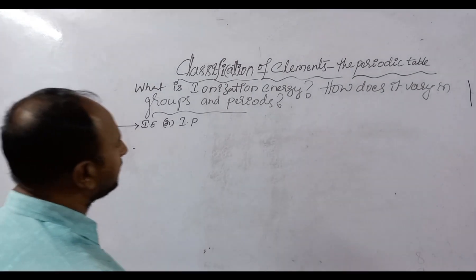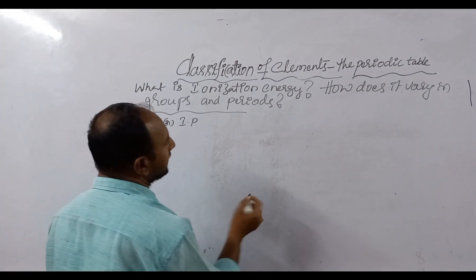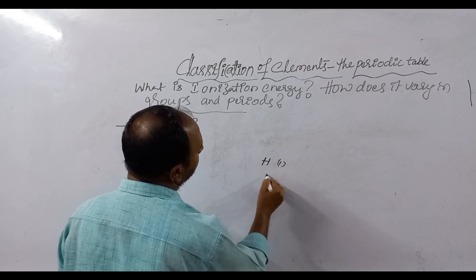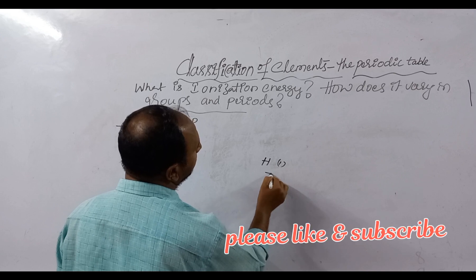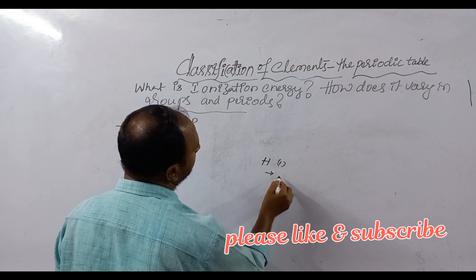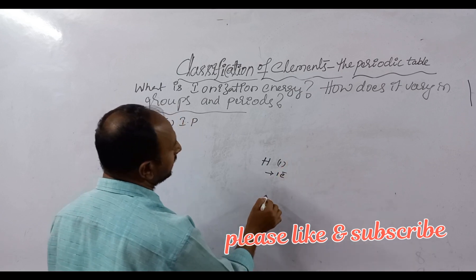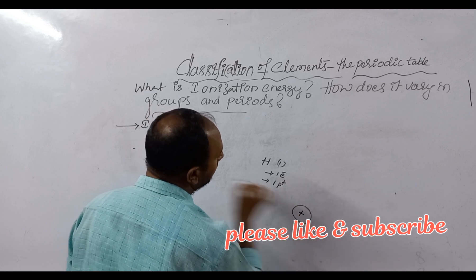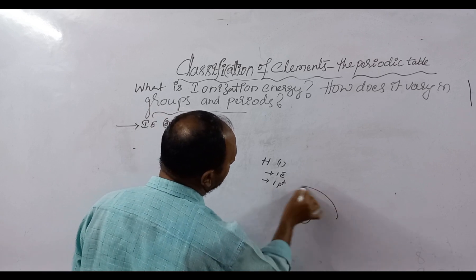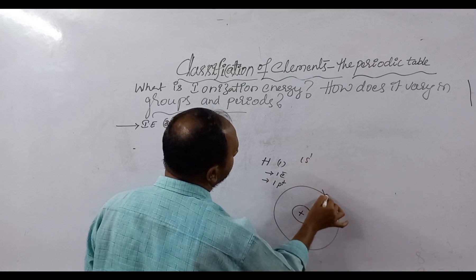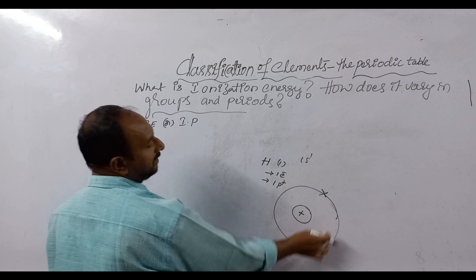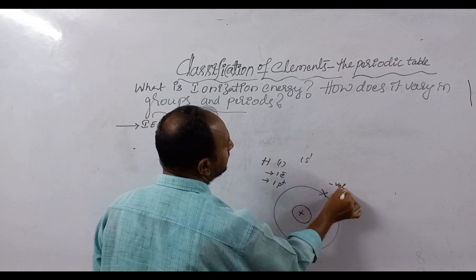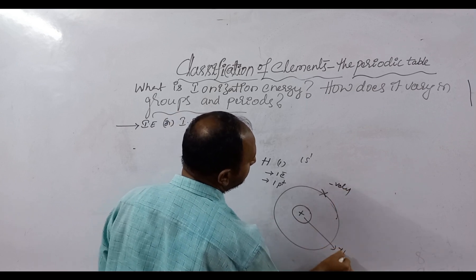What is ionization energy? For example, we are taking hydrogen — its atomic number is one. Atomic number means number of protons, which is also equal to number of electrons. So hydrogen atom has one electron and one proton. It is the nucleus of hydrogen atom. It has one proton and it is in the first shell, 1s1. In the 1s shell there is one electron. You know, the electron is a negatively charged subatomic particle and the nucleus charge is positive.